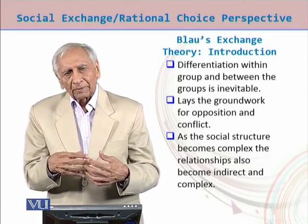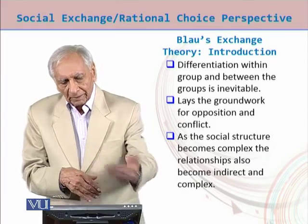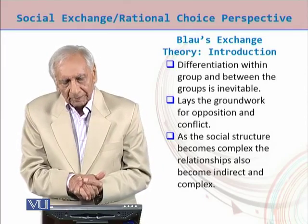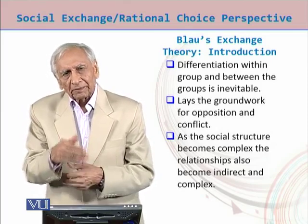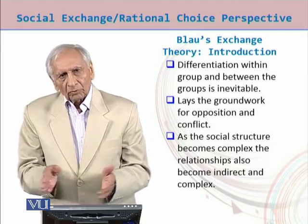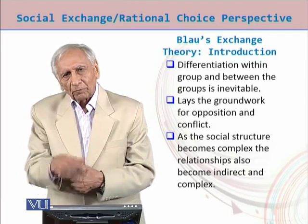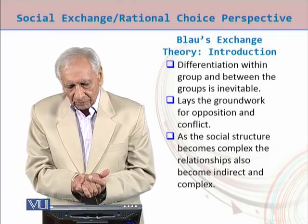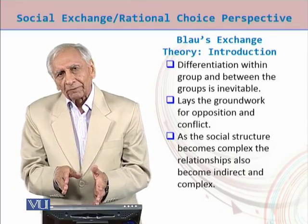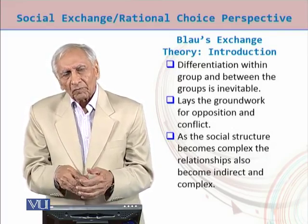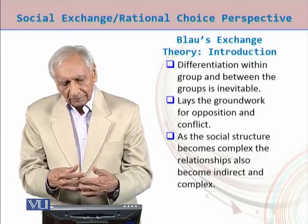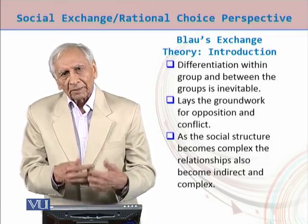Differentiation within groups and between groups is inevitable, as everyone has resources and is dependent on others. This lays the groundwork for opposition — people might feel deprived of some rights, which could lead to conflict when exchange rates are violated. As the social structure becomes complex, relationships also become indirect and complex. This is the quality of modern society, with its division of labor, complexity, different structures, and their interdependence — allowing for both direct and indirect exchange.